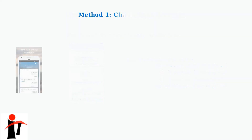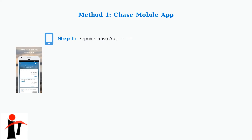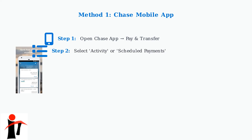There are two main ways to cancel a pending payment on Chase. The first and most convenient method is through the Chase mobile app. Step 1: Open the Chase mobile app and log in with your credentials, then navigate to the Pay and Transfer section from the main menu. Step 2: Look for the Activity section or Scheduled Payments option, where you'll find all your pending and completed transactions.